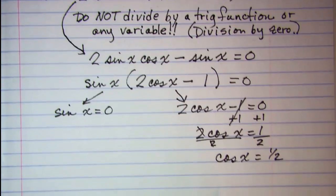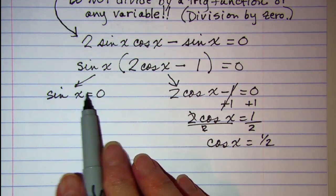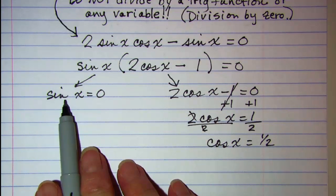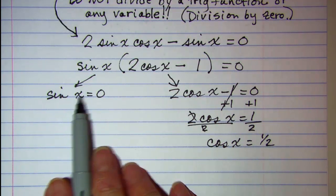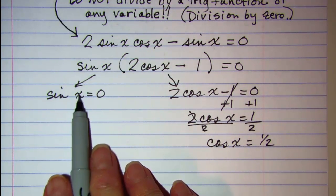So now I'm solving sin x equals 0. Remember sin is y over r. And so y is 0 when x is 0 and 180.